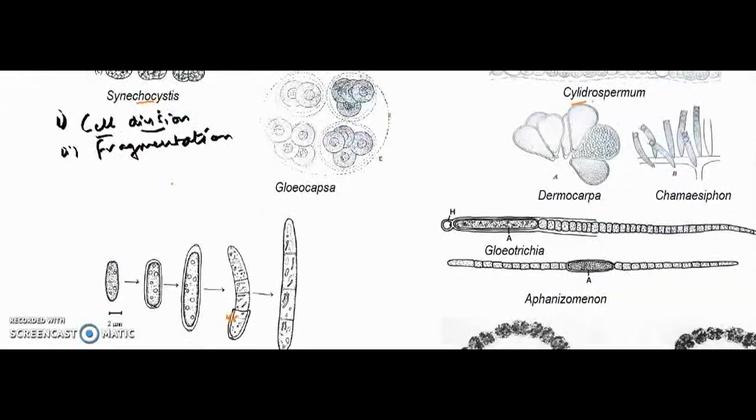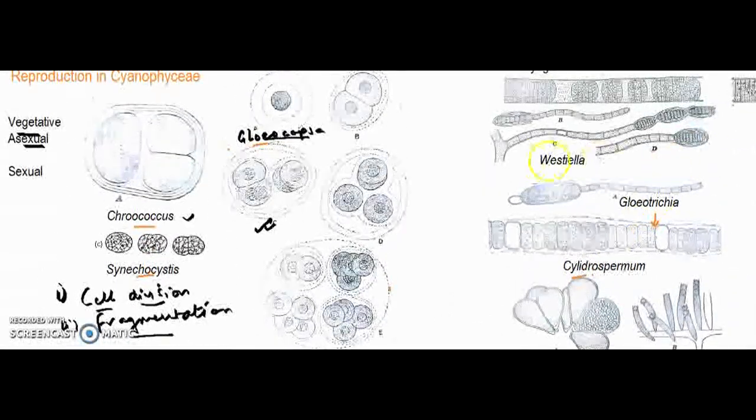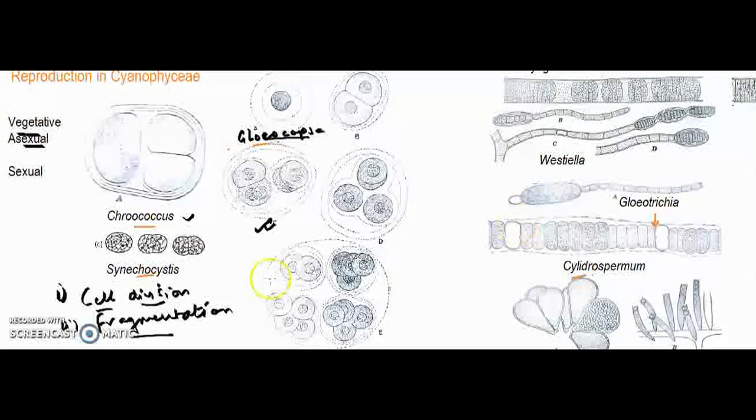Fragmentation type of vegetative reproduction is exhibited by filamentous members like Nostoc, Anabaena, Oscillatoria, Lyngbya, Gloeotrichia, Aphanizomenon, and Cylindrospermum. All filamentous members exhibit fragmentation.